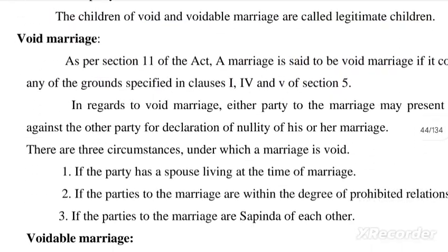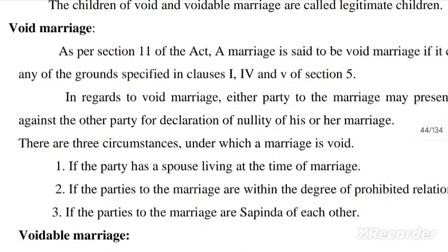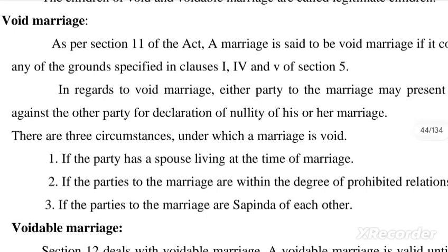As per section 11 of the Act, a marriage is said to be void if it contravenes any of the grounds specified in clauses 1, 4, and 5 of section 5. In regard to void marriage, either party may present a petition against the other for a declaration of nullity. There are three circumstances under which a marriage is void: if the party has a spouse living at the time of marriage; if the parties are within the degree of prohibited relationship; or if the parties are Sapinda of each other.